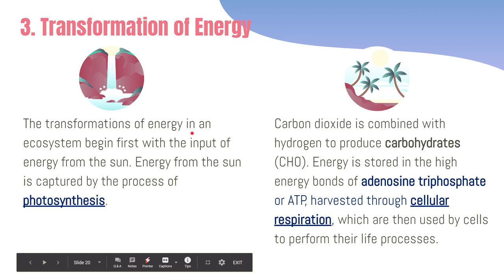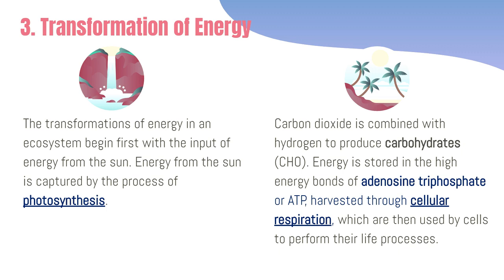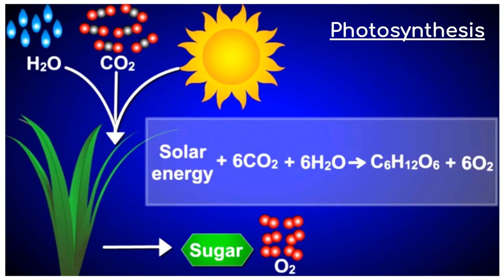The third principle is transformation of energy. Transformation of energy in an ecosystem mostly begins with the sun. Plants capture solar energy and convert it into chemical energy through photosynthesis — carbon dioxide is combined with hydrogen and with the presence of the pigment chlorophyll, plants produce carbohydrates or glucose molecules. Energy is then stored in the high-energy bonds of ATP, which is harvested through cellular respiration and used by cells to perform their life processes.